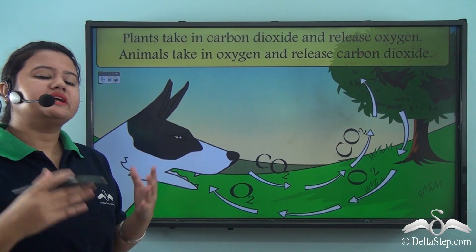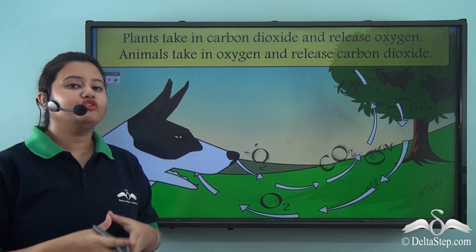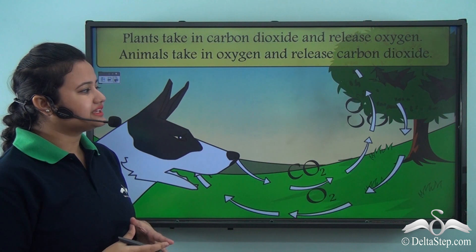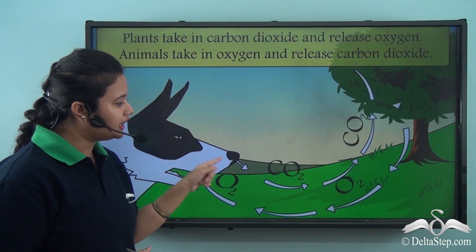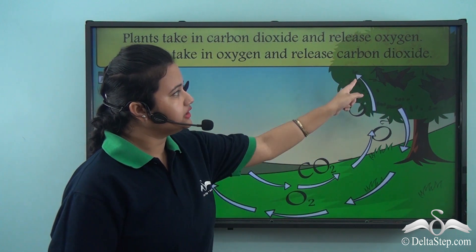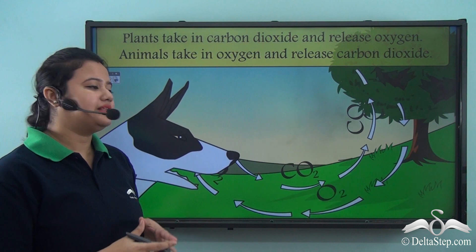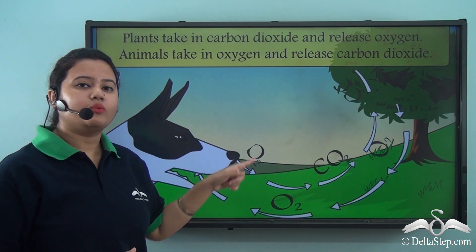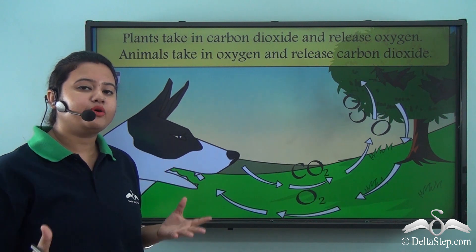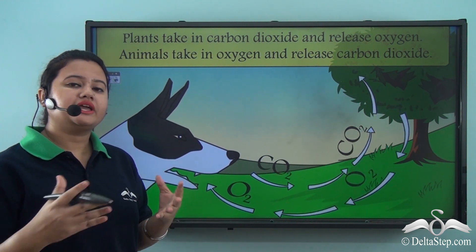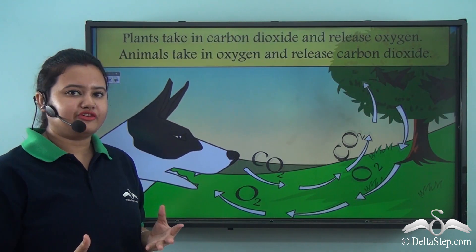We know 21% of the atmosphere is composed of oxygen. This oxygen is given by plants, which we breathe in, and we breathe out carbon dioxide which is eventually utilized by plants. Thus atmosphere helps in exchange of these vital gases. The oxygen that we inhale helps us to perform metabolic activities of our body and also helps in our survival.